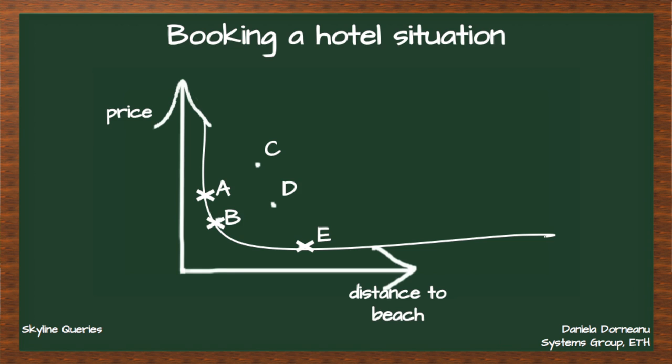The easiest way to explain how the Skyline operator works is to use the booking problem example. As you can see in the picture here, you have a bunch of hotels and each one has two features: one is distance to the beach and one is price.